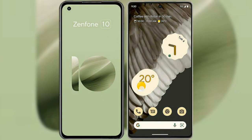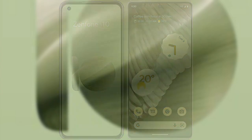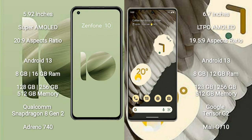I will compare the new Asus Zenfone 10 with the Google Pixel 7 Pro. The Asus Zenfone 10 comes with a 5.92-inch Super AMOLED display and an aspect ratio of 20:9. The Google Pixel 7 Pro comes with a 6.7-inch LTPO AMOLED display and an aspect ratio of 19.5:9.